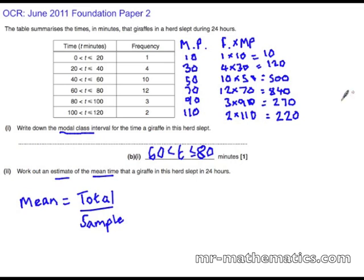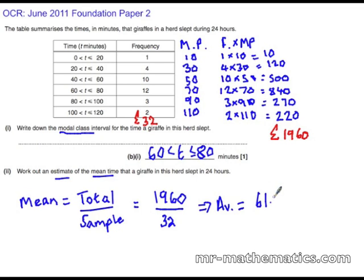So the total number of minutes in our entire sample, the sum of all of these, is 1960 minutes. So all the giraffes in total slept about 1960 minutes, and the sample size is calculated by the sum of the frequency which comes out as 32. So the total is 1960 divided by 32, which gives you the mean estimate for the average to be 61.25 minutes.